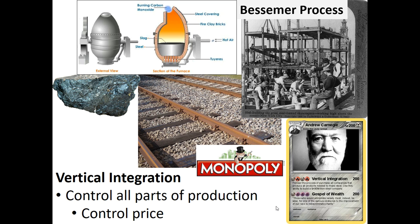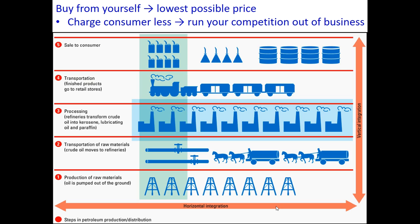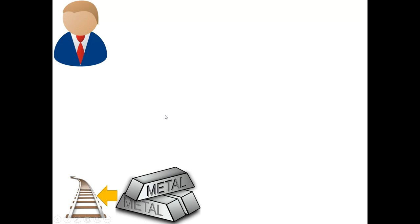Andrew Carnegie vertically integrated this process. In vertical integration, you buy from yourself at the lowest price, then charge the consumer less. Once you charge the consumer less, you run out your competition, and then you're all on your own to jack the price up again. You're buying from yourself at the lowest possible price.